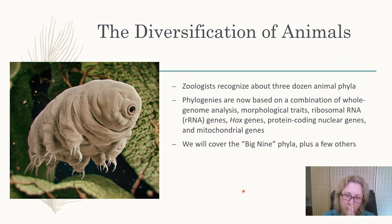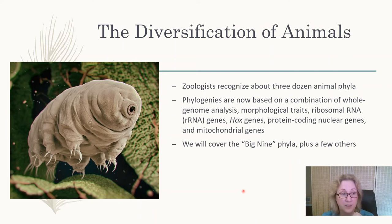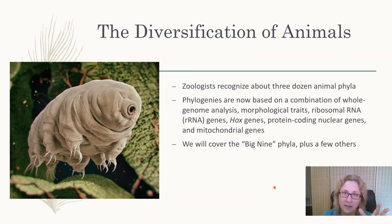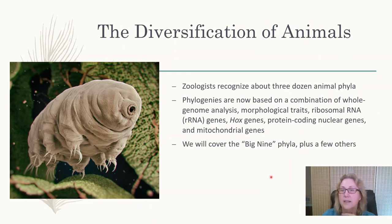New phyla are occasionally discovered — a new animal phylum was found about 20 years ago when a single species so different from anything else was discovered that it had to be placed in its own phylum. Of the roughly 36 phyla, nine represent over 90 percent of all animals alive today — these are called the Big Nine phyla.